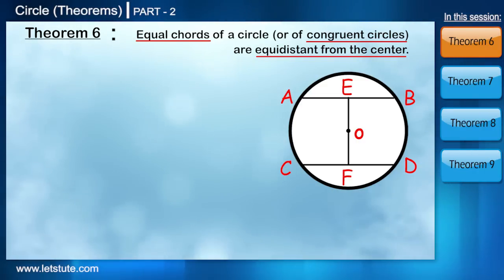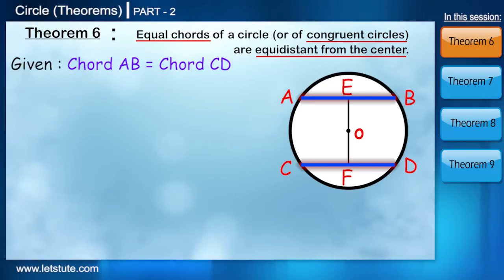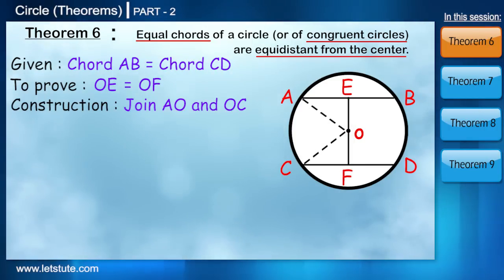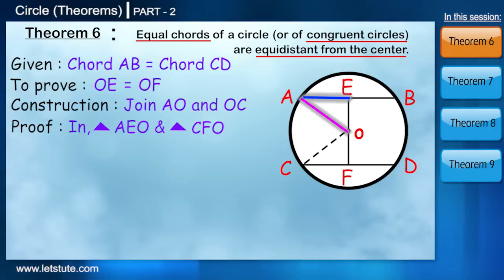So let's consider a circle with center O and two equal chords AB and CD. We have to prove that the distance from the center to the chord is equal. Let's call the distance as OE and OF. So if we can prove triangle AEO is equal to triangle CFO, then we can say that distance OE is equal to OF.